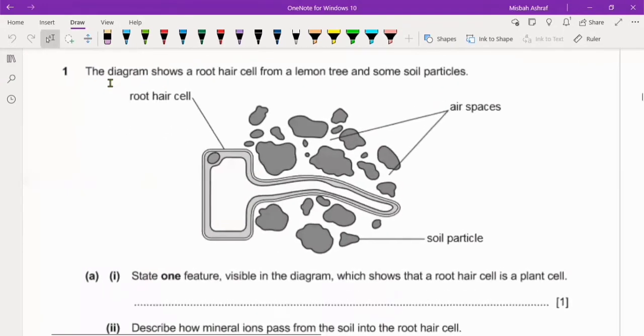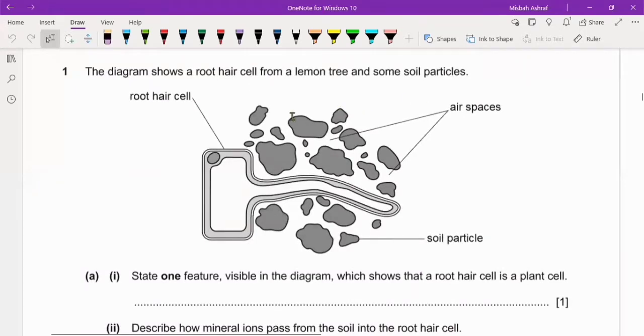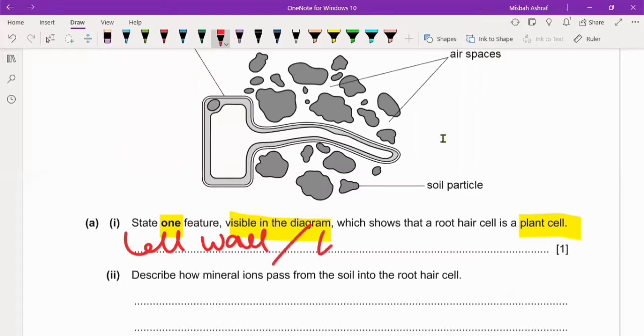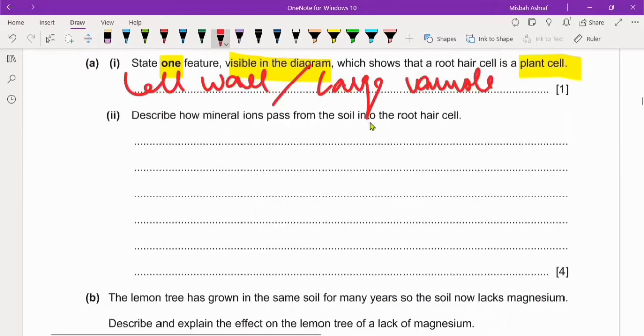The diagram shows a root hair cell from a lemon tree and some soil particles. This is the root hair cell, these are air spaces, and these are the soil particles. State one feature visible in the diagram which shows that a root hair is a plant cell. This is for one mark, very simple visible features. Describe how the mineral ions pass from the soil into the root hair cell. We have to tell about mineral ions, and you can see this is for four marks.